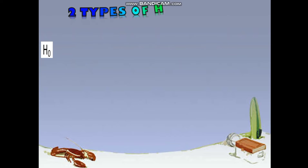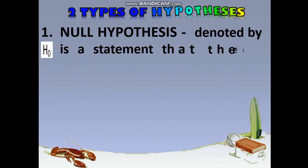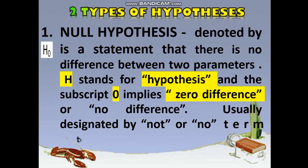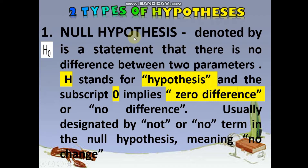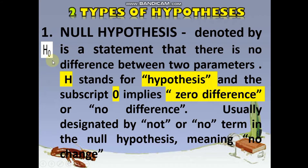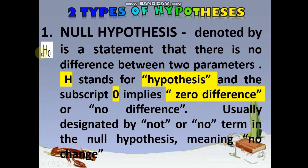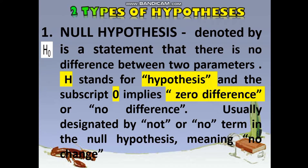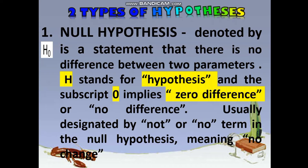There are two types of hypothesis. The first one is the null hypothesis, and the second one is the alternative hypothesis. The null hypothesis is denoted by H sub 0, where '0' stands for zero difference and 'H' stands for hypothesis. Combining these, H sub 0 means 'hypothesis of no difference' or 'hypothesis of zero difference.'